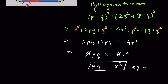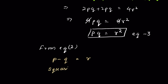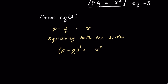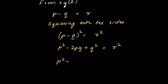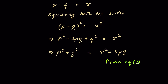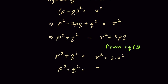Now from equation 2, P minus Q equals R. Squaring both sides: (P minus Q) squared equals R squared, or P squared minus 2PQ plus Q squared equals R squared, which we can write as P squared plus Q squared minus 2PQ equals R squared. From equation 3, PQ equals R squared, so P squared plus Q squared equals R squared plus 2 times R squared. Therefore, P squared plus Q squared equals 3R squared.